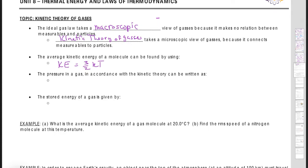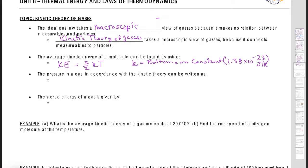In the equation KE = (3/2)kT, k is the Boltzmann constant, which we saw in pV = NkT. Its value is 1.38 × 10⁻²³ joules per kelvin. The units are joules per kelvin because you need an answer in joules, and since you're multiplying by temperature, kelvin goes in the denominator.